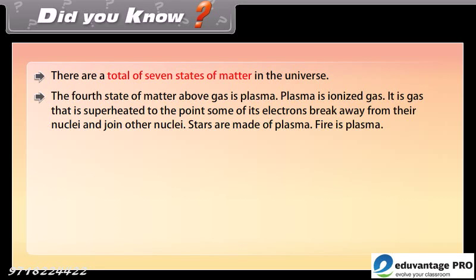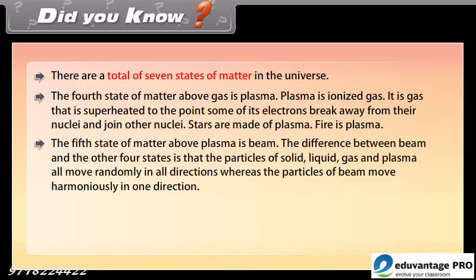Fire is plasma. The fifth state of matter above plasma is beam. The difference between beam and the other four states is that the particles of solid, liquid, gas and plasma all move randomly in all directions whereas the particles of beam move harmoniously in one direction.